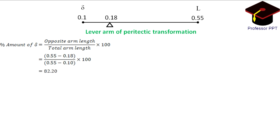The percentage amount of liquid is equal to the opposite arm length upon the total arm length into 100. That is equal to 0.18 minus 0.1 divided by 0.55 minus 0.1 into 100, that is equal to 17.8%.